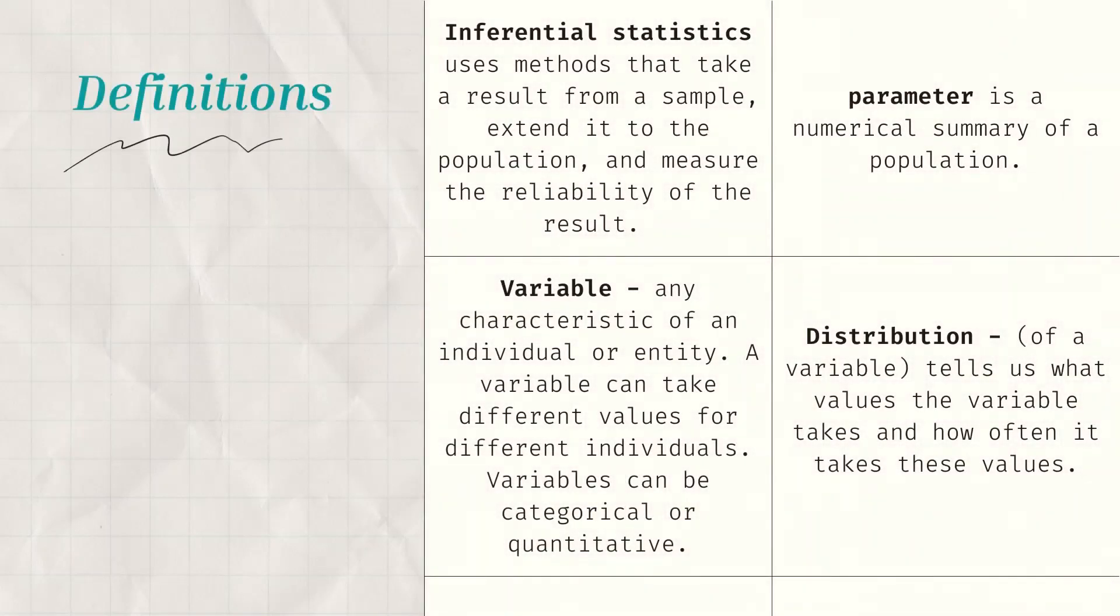The next one is the inferential. When we say inferential, this is a method that takes result from a sample, extends it to the population, and measures the reliability of the result. Now for the variable, this is any characteristic of an individual or entity, or this is used to differentiate values of different individuals. Variables can be categorical or quantitative, or qualitative or quantitative.